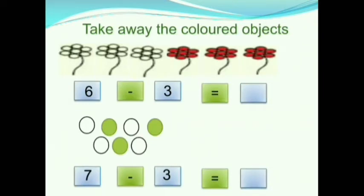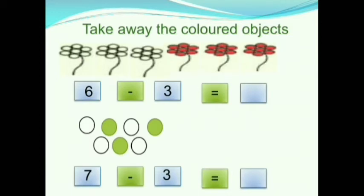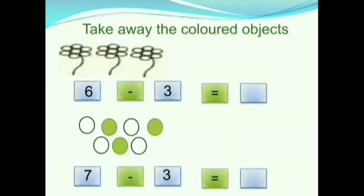Children, here we have flowers. How many flowers are there? Let us count it. 1, 2, 3, 4, 5, 6. There are 6 flowers. 3 flowers are colored and 3 flowers are not colored. Now we will take away the colored flowers. After taking away the colored flowers, how many flowers are remaining? 1, 2, 3. 3 flowers are remaining. So, 6 minus 3 is equals to 3.